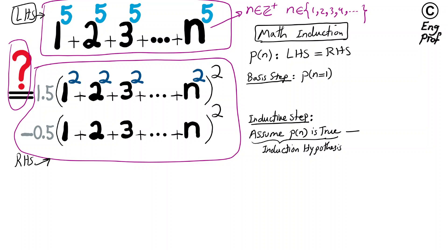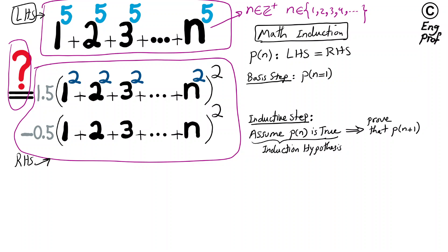Then, making that assumption, we prove or conclude that P(n+1) is true as well. That's the part we need to prove — we use this assumption to prove this conclusion.